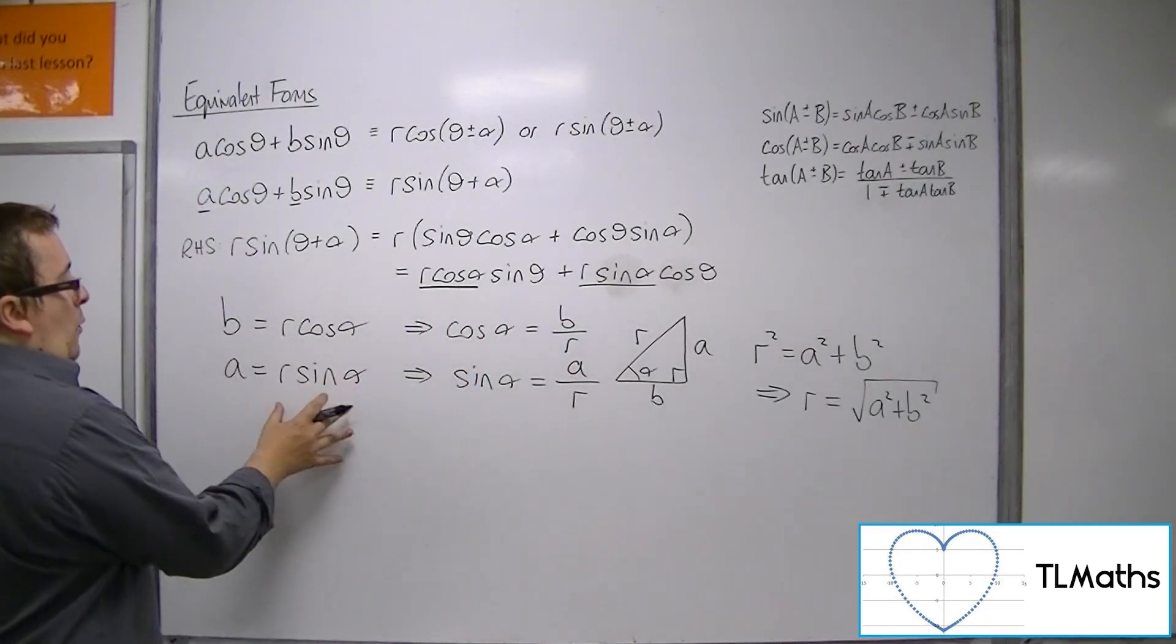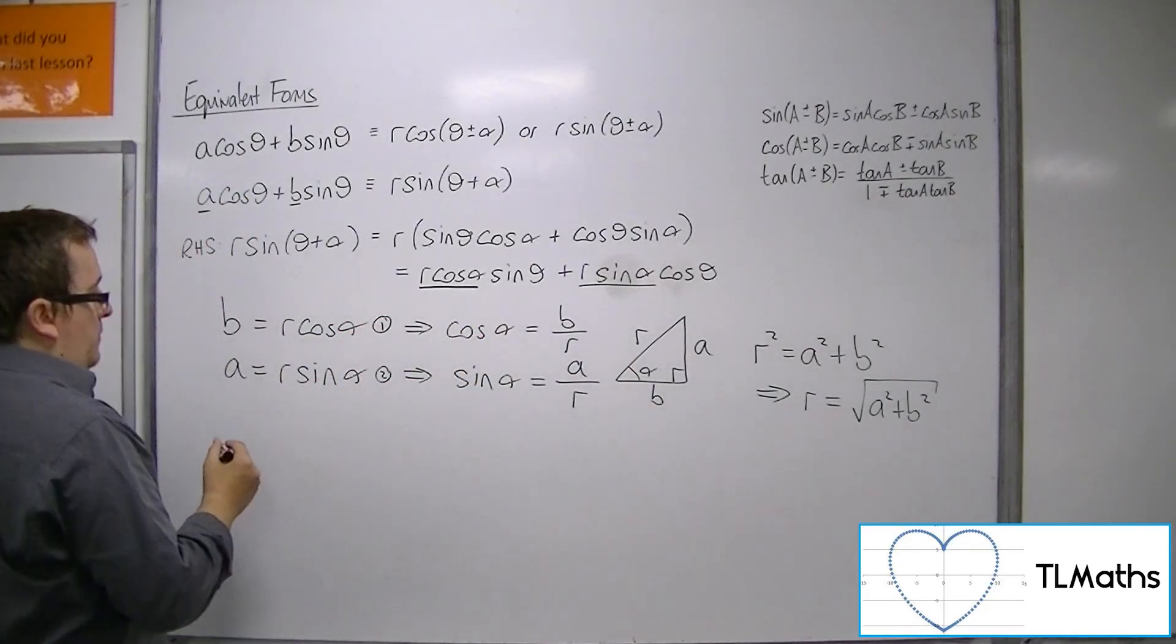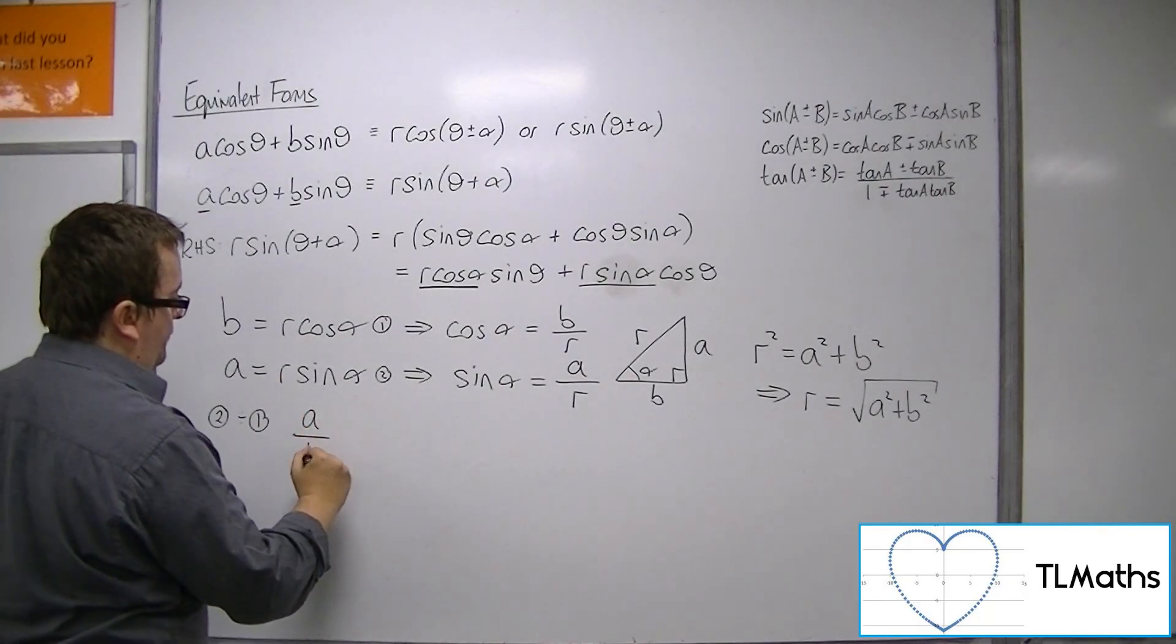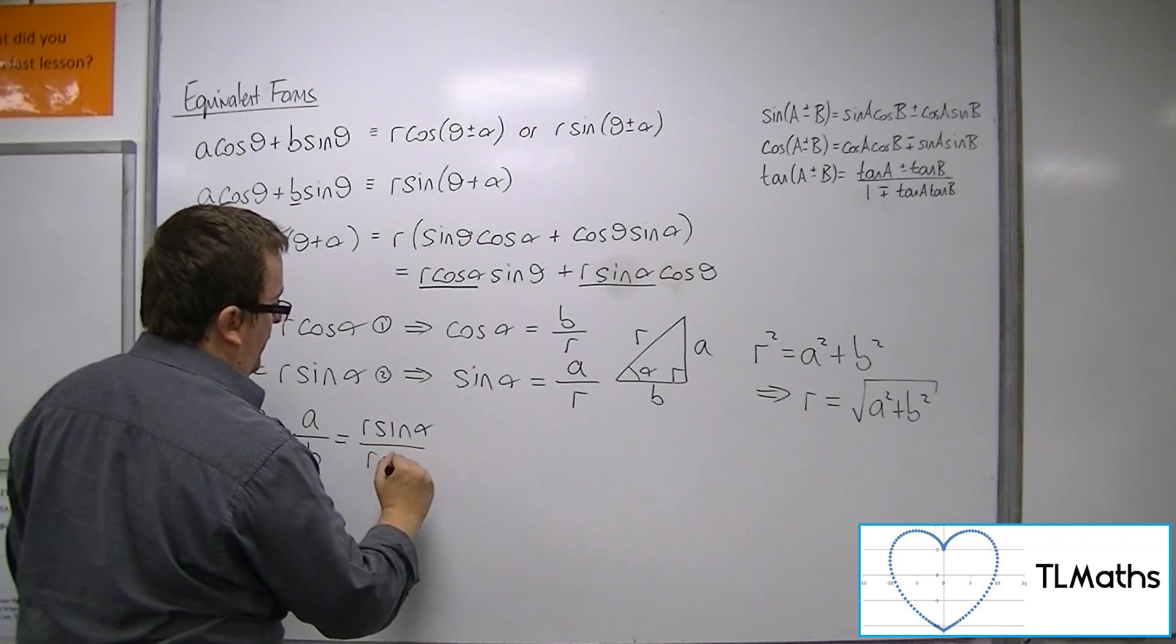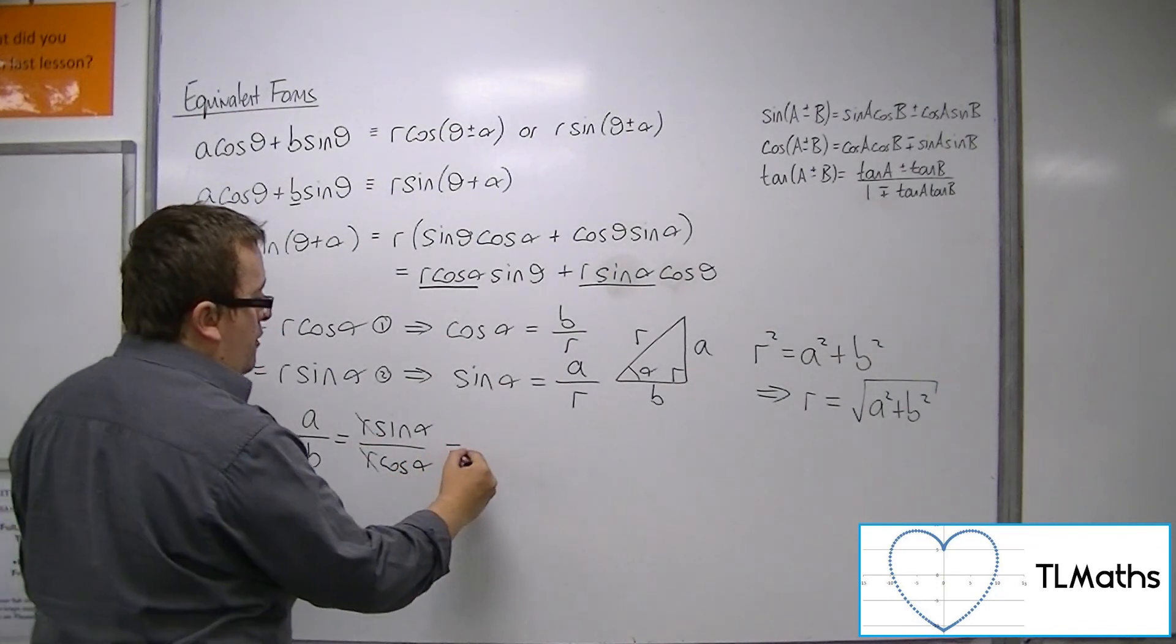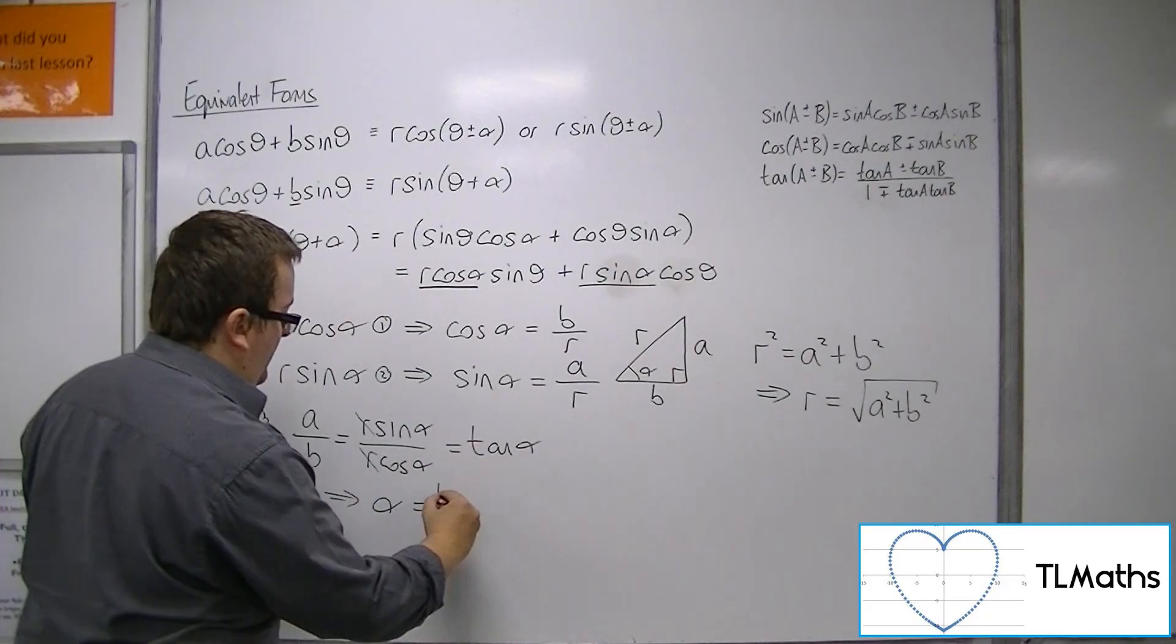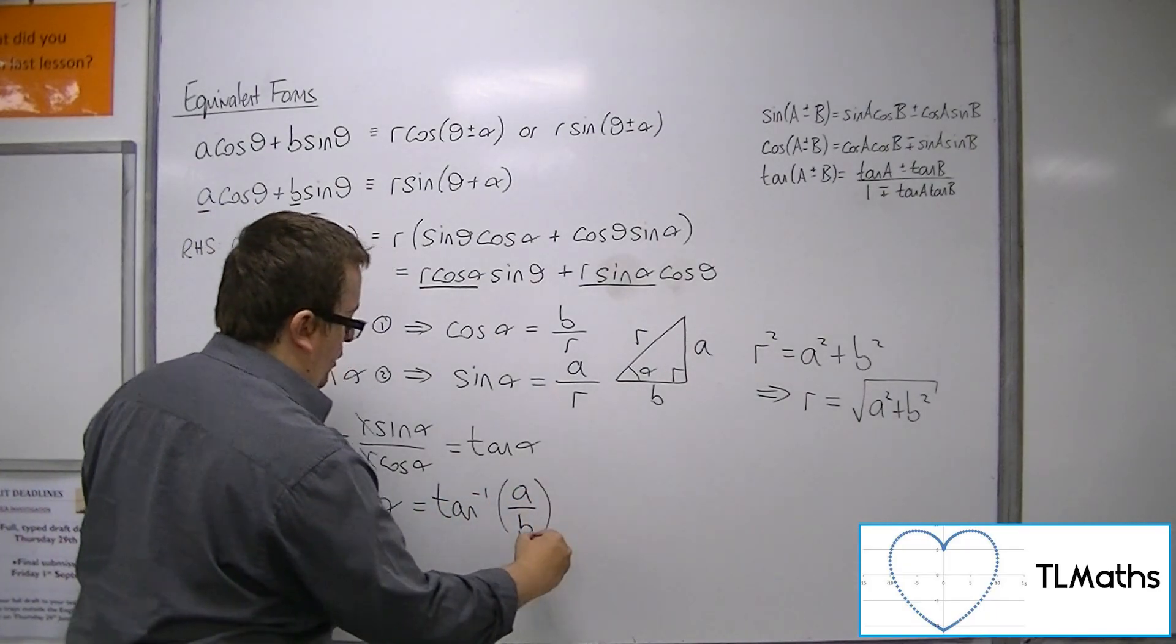Now, what we can also do is we can say, well, if that's equation 1 and that's equation 2, I could do equation 2 divided by equation 1 and say that a over b must be equal to r sine alpha over r cos alpha. Now the r's here will cancel, sine alpha over cos alpha is tan alpha. So that means that alpha must be the inverse tan or arc tan of a over b.